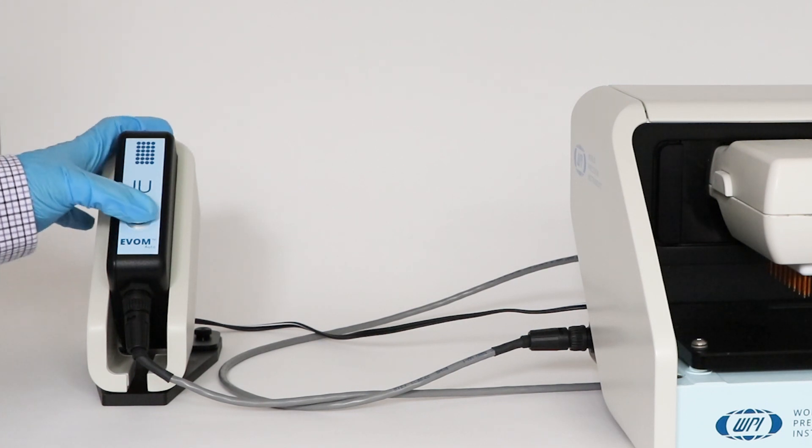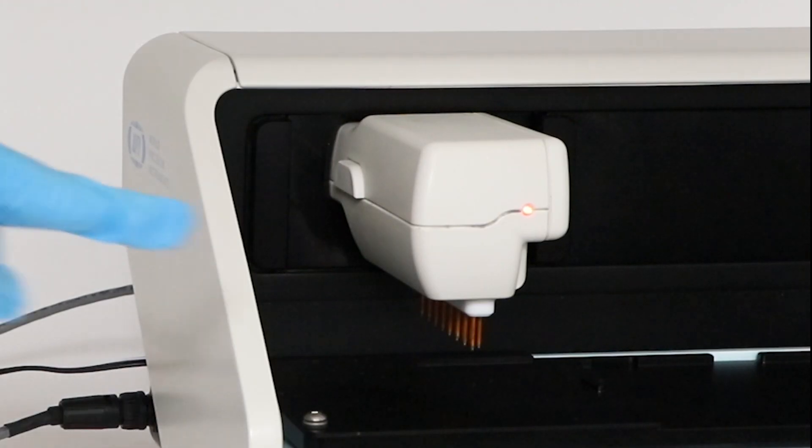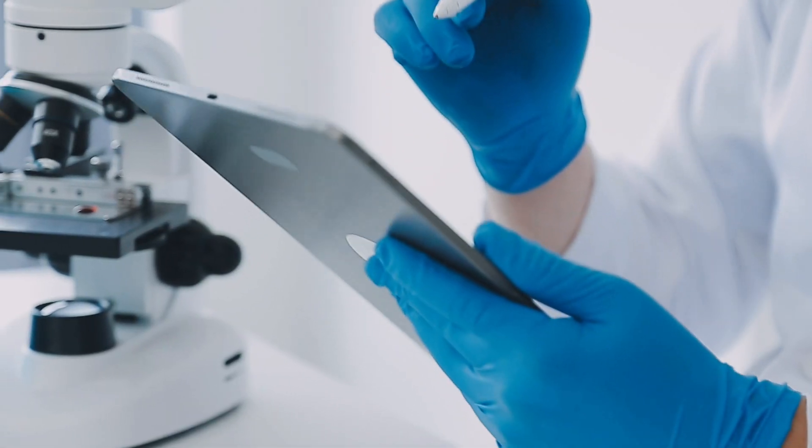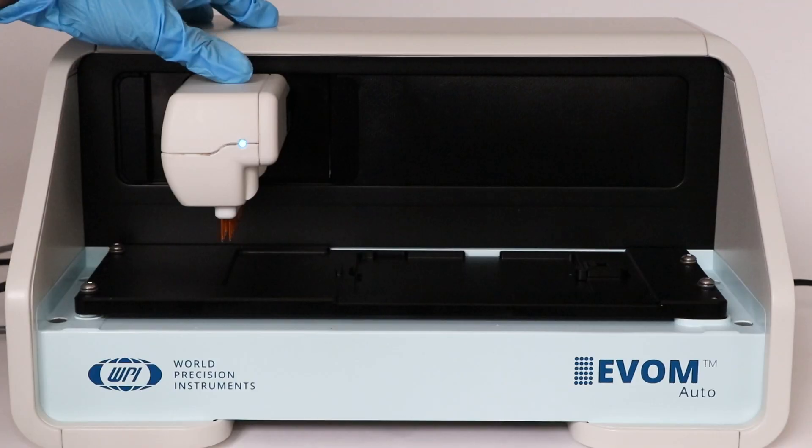Next, power on the interface unit. The light will be red on the electrode array when the interface unit is first powered on. After the communication is established between the software and the EVAM Auto system, this red light turns blue.